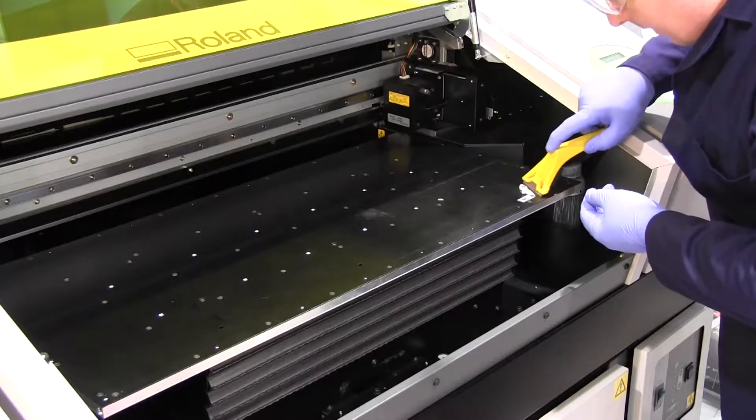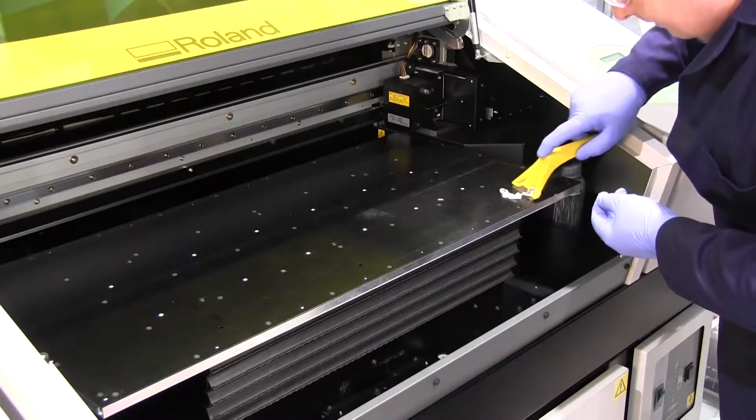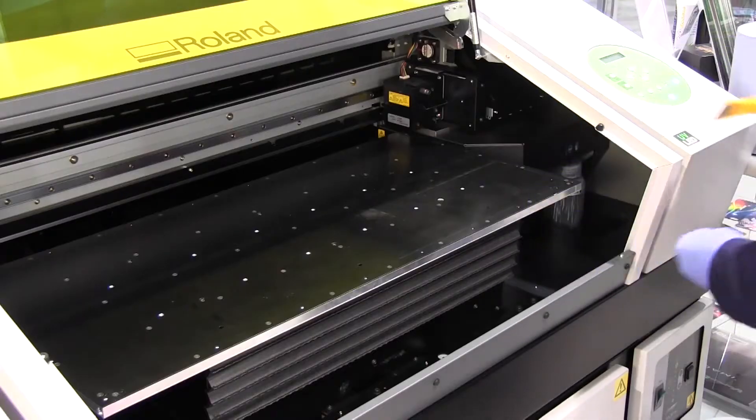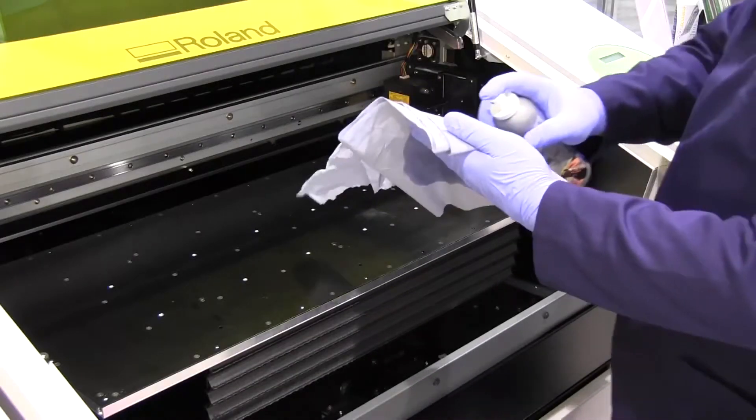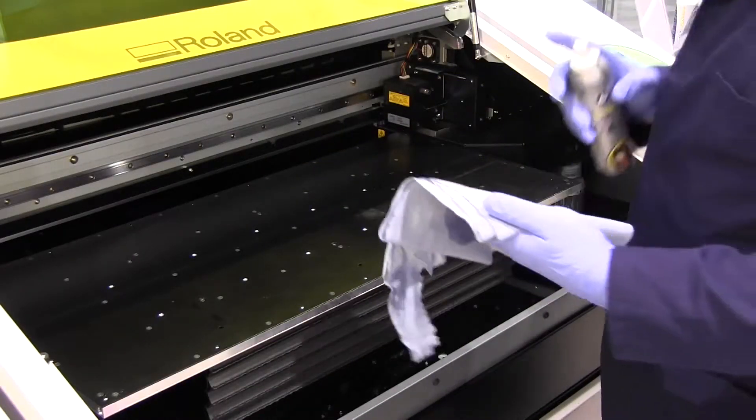Here you can see we are using a scraper to remove any print or ink on the table. Then we are going to use some isopropanol to clean the surface.